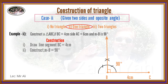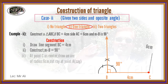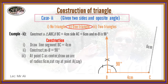Taking B as center, draw an arc of radius 6 centimeters. The arc intersects the ray drawn at the 90 degree angle at point A.